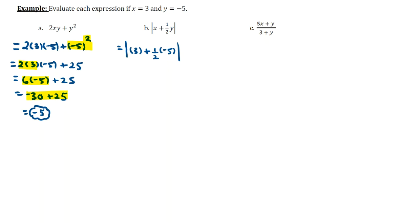Just a heads up, you can treat the absolute value symbols as their own set of parentheses, meaning that we'll have to clean everything up that's inside the absolute value symbols before we apply the absolute value symbols. So with that said, we'll go ahead and multiply 1 half to negative 5.